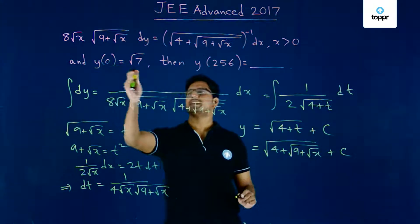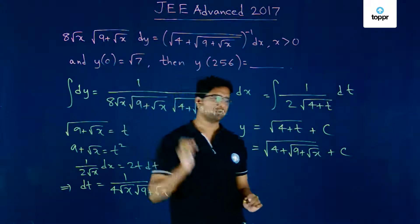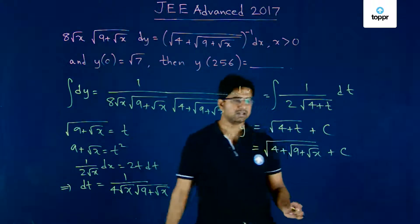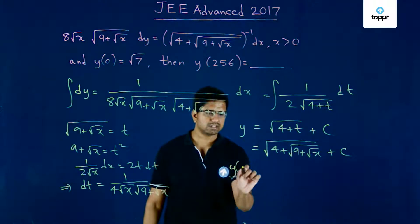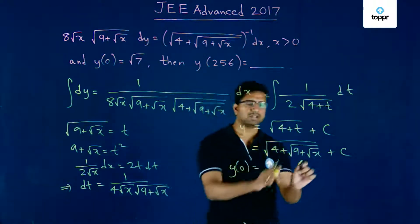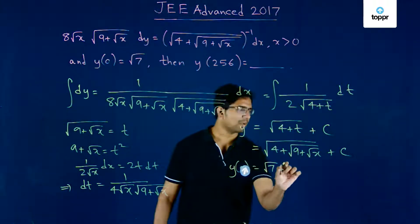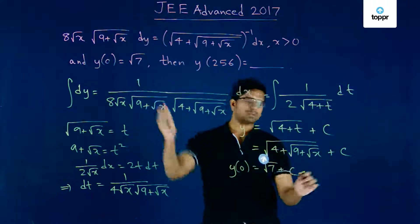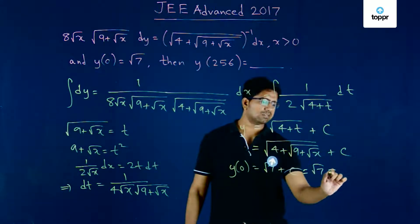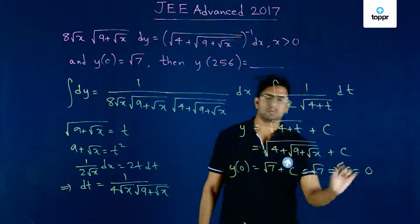It's given that y at the value of 0 equals root 7. If we substitute 0 here, we get root 7 plus c, but it's given to be root 7, which implies the value of c equals 0.